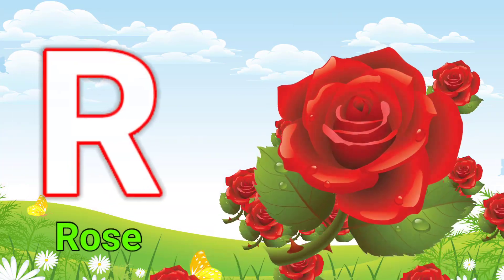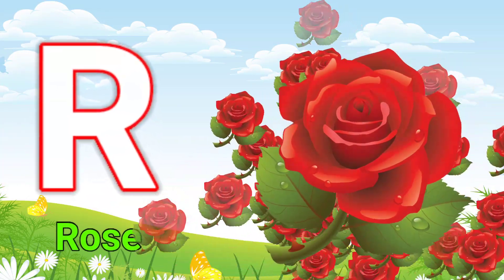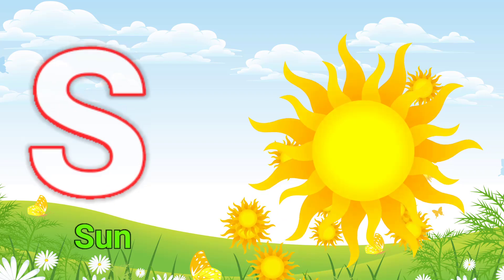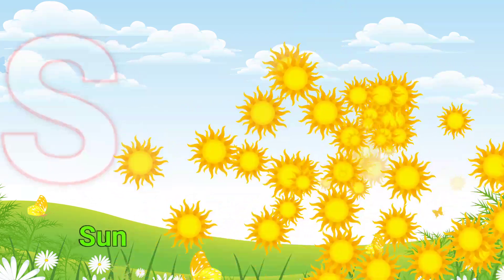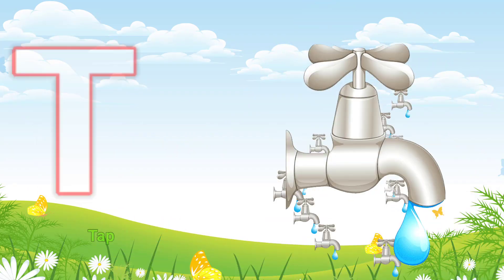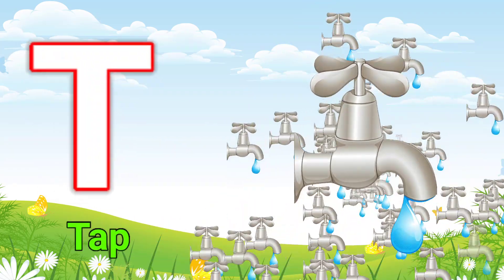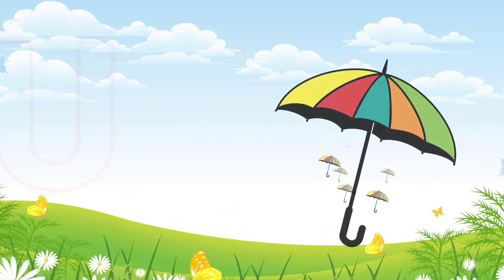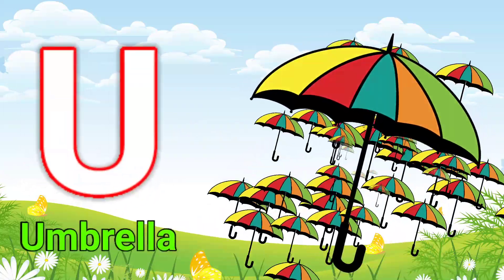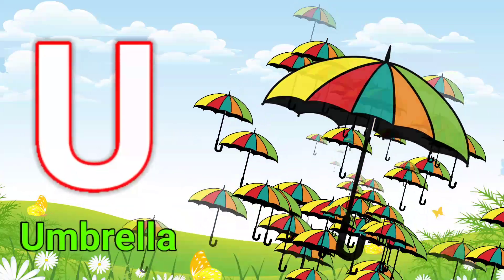R for rose, S for sun, T for tap, U for umbrella.